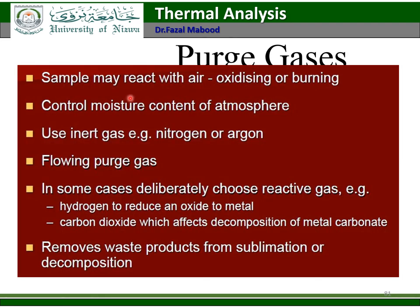Purge gas selection: samples may react with air — oxidizing or burning — so control of atmosphere is important. Use inert gas such as nitrogen, argon, or helium. In some cases, directly choose a reactive gas — for example, hydrogen to reduce an oxide to metal, or carbon dioxide which affects decomposition of metal carbonate. Purge gas also removes waste products from sublimation or decomposition.